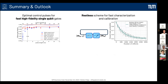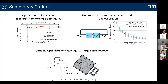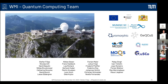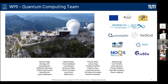The conclusion is that we must care about how to control the pulses. We want fast, high-fidelity single-qubit gates and also two-qubit gates, and we need to find schemes to do this fast and efficiently because we have to deal with the hardware. The outlook is to apply these methods for optimizing two-qubit gates and also for larger-scale devices that we currently have running and operating. Thank you for listening.